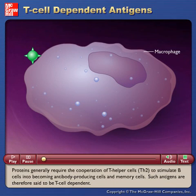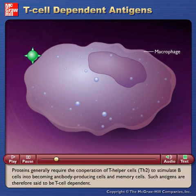Proteins generally require the cooperation of T helper cells, Th2, to stimulate B cells into becoming antibody-producing cells and memory cells. Such antigens are therefore said to be T cell dependent.